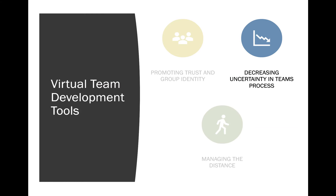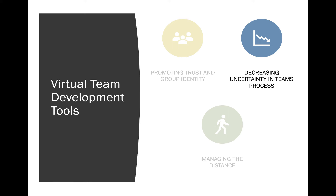Now we go into the second bucket of virtual team development tools: decreasing uncertainty and team processes. One of the most significant threats when going virtual is how effective the team will function — there's uncertainty, less frequent communication, potential frustration, confusion, technology issues. How you can help manage this: first, apply formal group structure — have a formal agenda to help guide you, or offer to develop one. Have clear task deadlines.